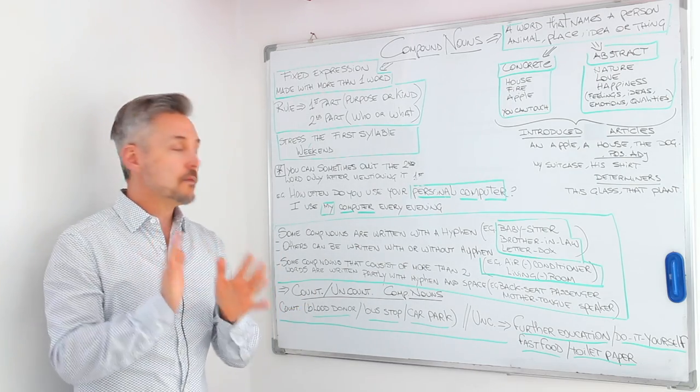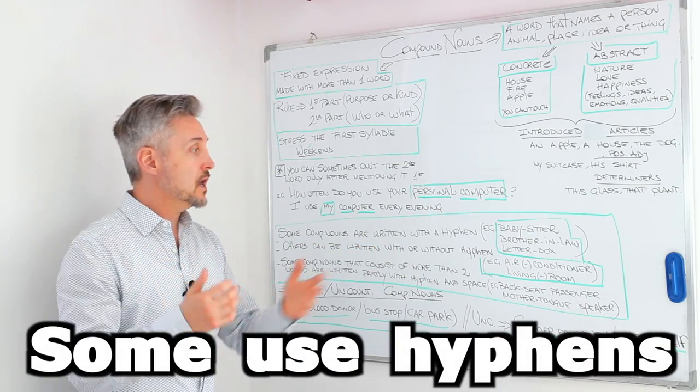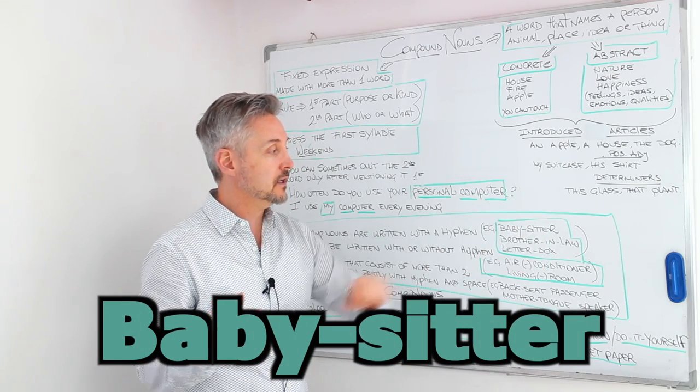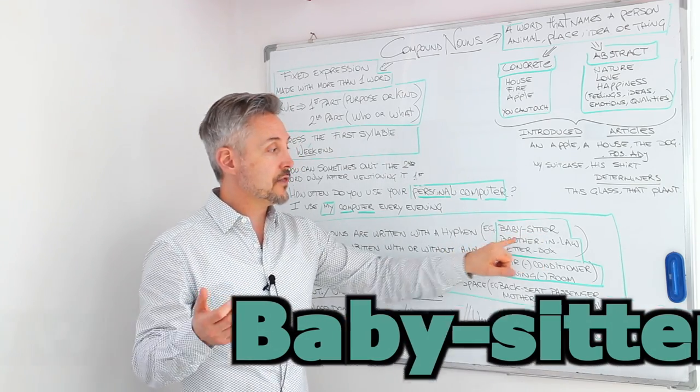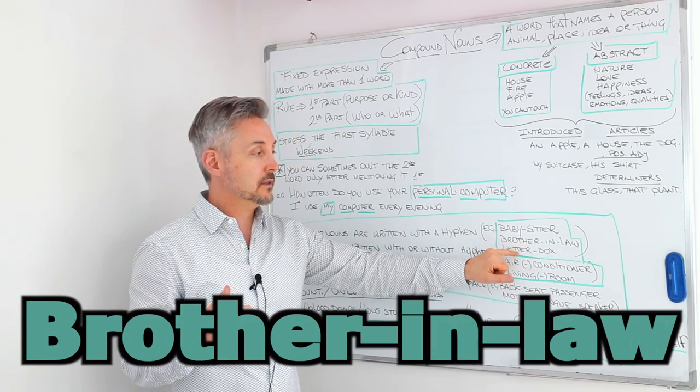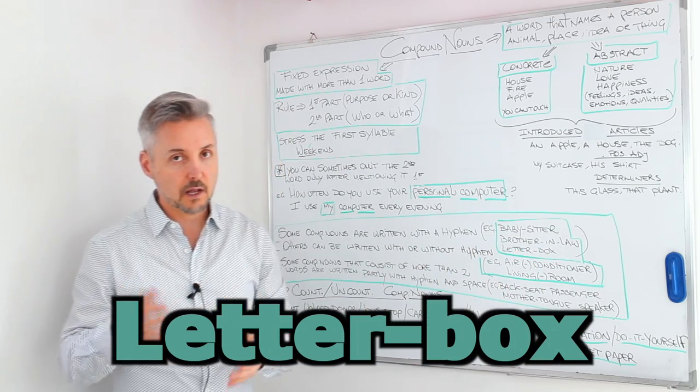Now, some compound nouns are written with hyphens. For example, babysitter, and here we have a hyphen. Or brother-in-law, here we have two hyphens. And letterbox. These are examples and there are a lot of them.